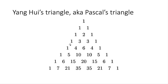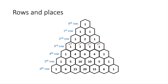There's a special way to number these rows and the places within rows. The top — the peak — is known as the zeroth row. That sounds a little weird, but it will make sense shortly. The row with two ones is the first row, then the second, third, fourth, fifth, sixth row. If you look at the number just after the one on the left — or just before the one on the right — that number corresponds to the row number. So there's a six there; this is the sixth row.